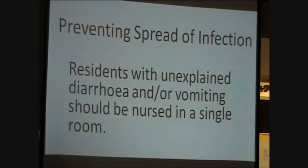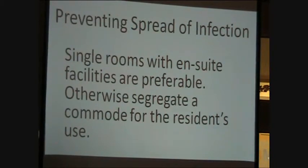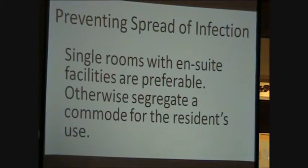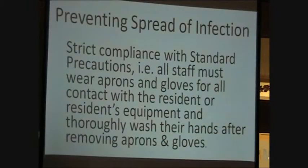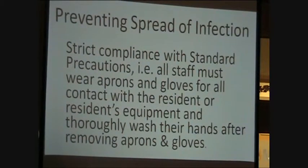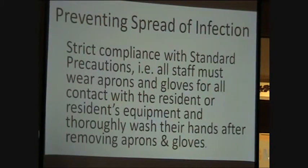Therefore, residents with unexplained diarrhea or vomiting should be nursed in a single room. Ideally, they should be single rooms with an en suite toilet and shower. If these are not available, it is necessary to segregate a commode for use only by the person who has the diarrhea and vomiting. To prevent spread, it is essential that there is strict compliance with infection control precautions. All staff must wear aprons and gloves for contact with the resident and with the resident's equipment, and must thoroughly wash their hands after removing aprons and gloves. Alcohol rubs are not recommended for use after contact with residents who have diarrhea and vomiting.